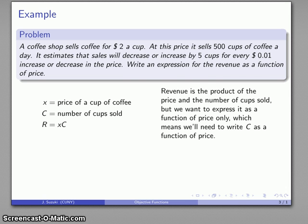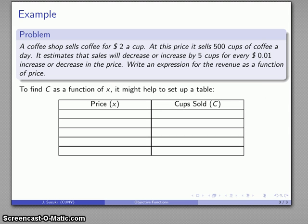I'd like to express revenue as a function of price only, which means that x is fine. The number of cups sold, on the other hand, I would also like to write as a function of price. If you don't have a good way of approaching the problem, here's something that might help. It might help us to set up a table that will make it easier to see what the relationship is between the price x and the number of cups sold.